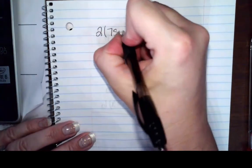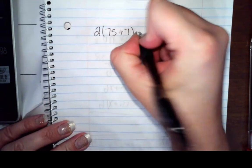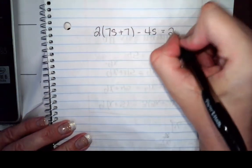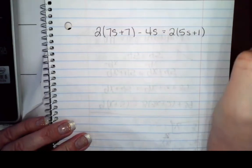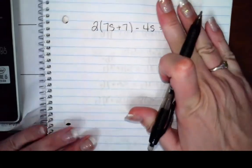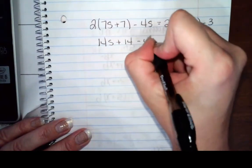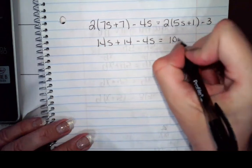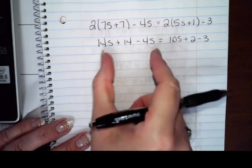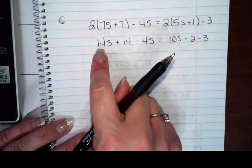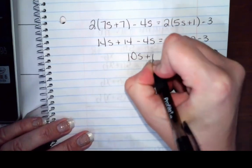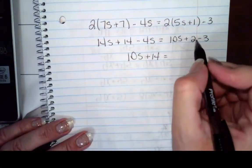We're going to solve. I've got 2 times 7s plus 7 minus 4s equals 2 times 5s plus 1 minus 3. So what do I know how to do on the left? I can distribute, so I have 14s plus 14 minus 4s. What can I do on the right? I can distribute. 10s plus 2 minus 3. Now I can combine like terms on the left. 14s minus 4s is 10s plus 14. 10s and then I got 2 minus 3.